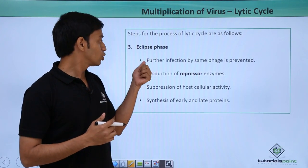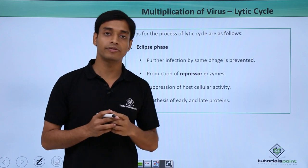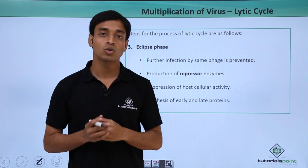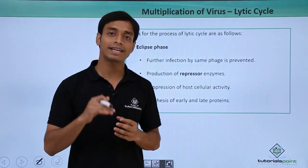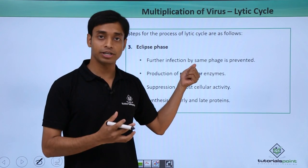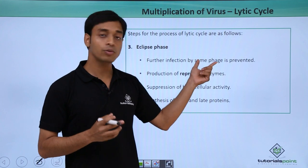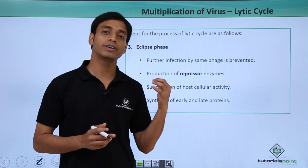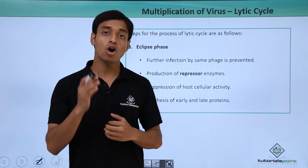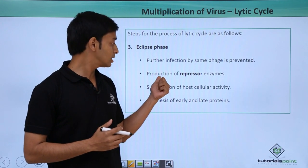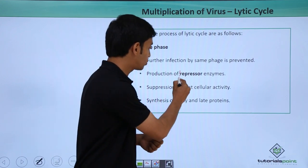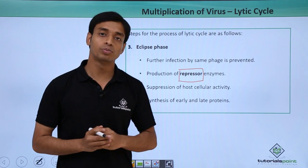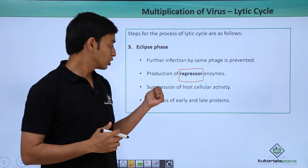After penetration, the third step is known as the eclipse phase. Here, further infection by the same type of phage is prevented. If a certain type of phage has infected a bacterium, it does not allow similar phages to infect that same bacterium, as that would cause unnecessary competition for resources. This is known as superinfection immunity, and it is brought about by the production of certain repressor enzymes.